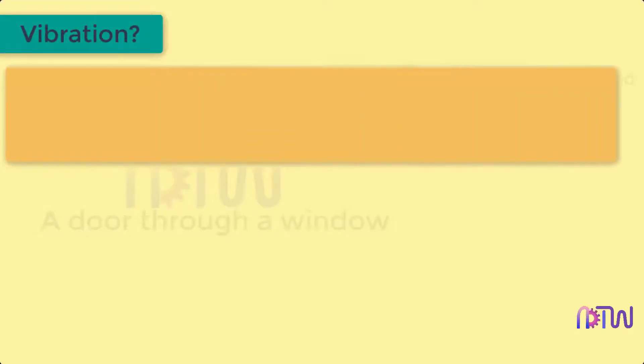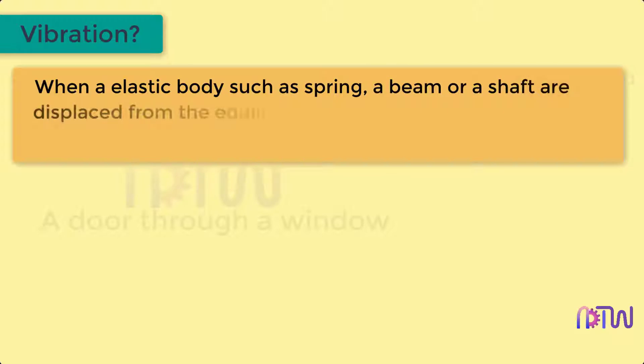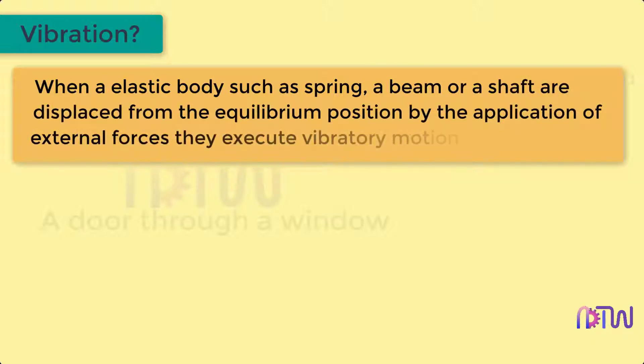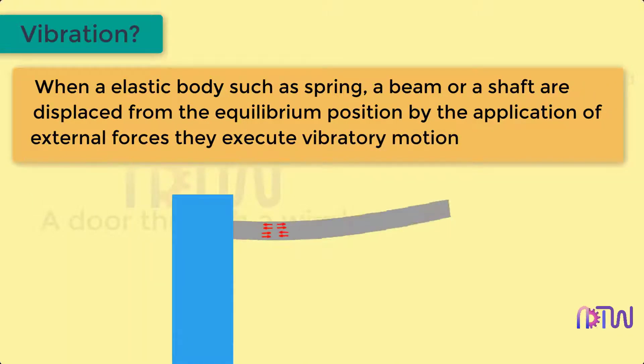What is vibration? When an elastic body such as a spring, a beam, or a shaft are displaced from the equilibrium position by the application of external forces, they execute vibratory motion. When body particles are displaced by the application of external force, the internal forces in the form of elastic energy present in the body try to bring the body to its original position.